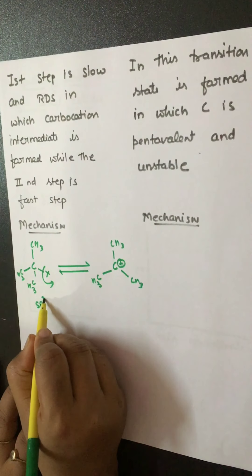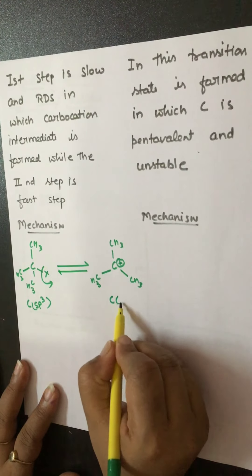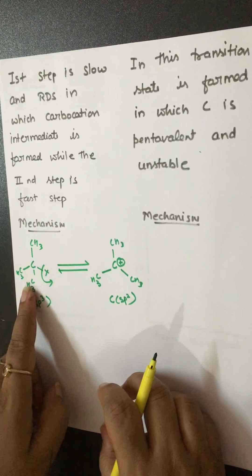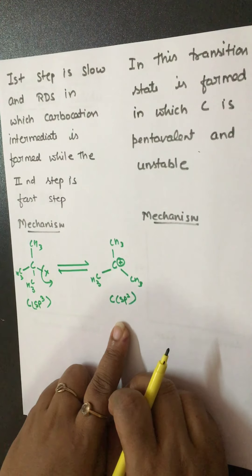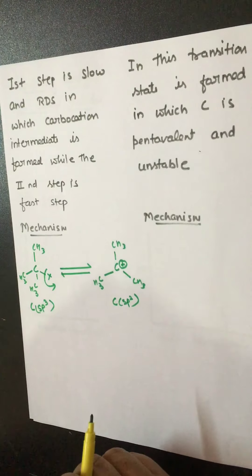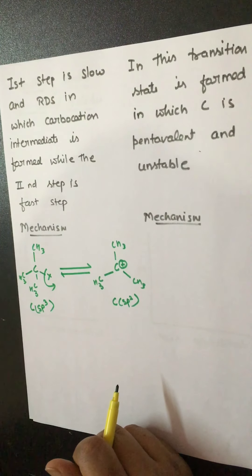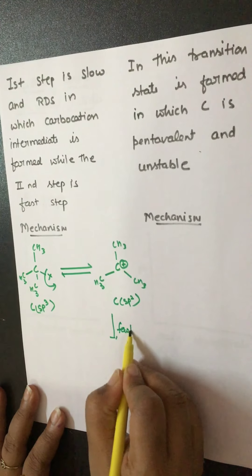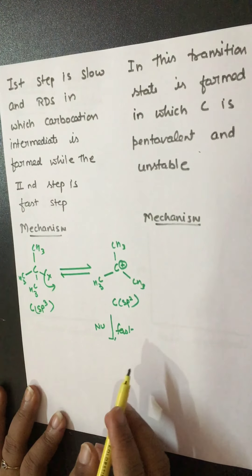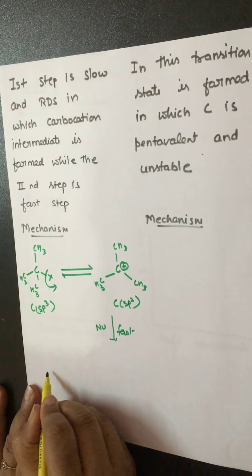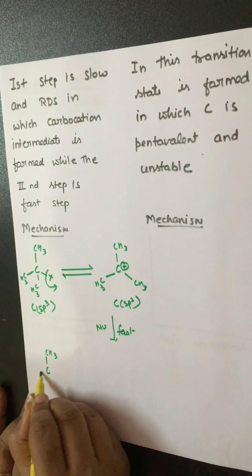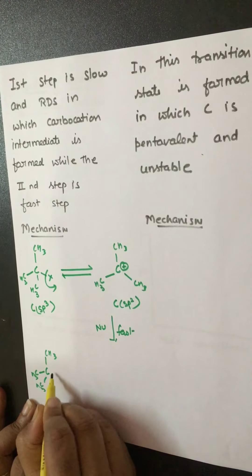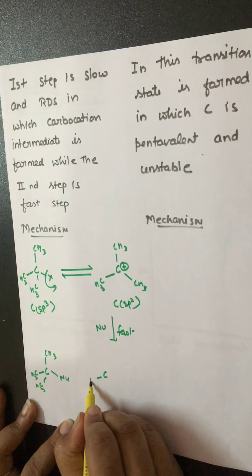Now the carbocation intermediate that is forming — in this substrate the carbon is sp3 hybridized, converting from tetrahedral geometry to trigonal planar geometry. Trigonal planar is a planar geometry. Now the nucleophile attack on this planar geometry can take place from the front side or the back side. So the next step, which is the fastest step, involves nucleophile attack from both sides — from front and from back — giving us two forms.